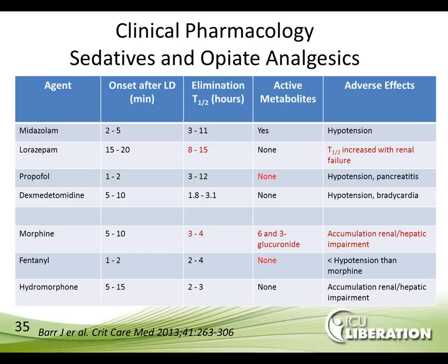Morphine has multiple active metabolites — morphine-3 and morphine-6-glucuronide — that accumulate in both renal and hepatic impairment, especially during continuous infusion. Elderly patients with poor renal function can retain morphine for significant periods. Fentanyl, by contrast, has no active metabolites, a very short half-life, less hypotension than morphine, and less histamine release. Therefore, fentanyl and propofol would be the most optimum agents for this patient at this time.